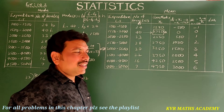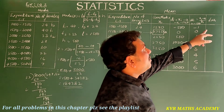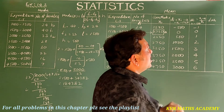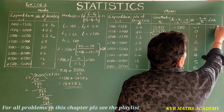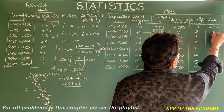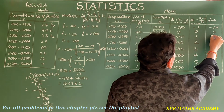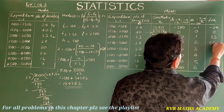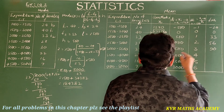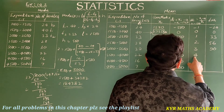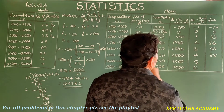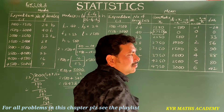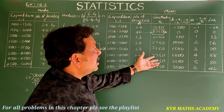Now computing fi×ui: 24×(−1) = −24, 40×0 = 0, 33×1 = 33, 28×2 = 56, 30×3 = 90, 22×4 = 88, 16×5 = 80, 7×6 = 42.